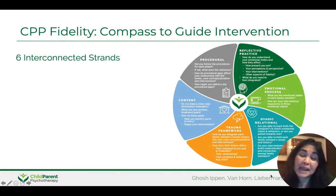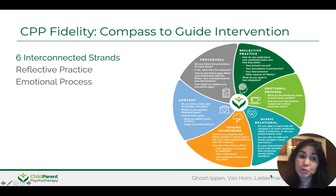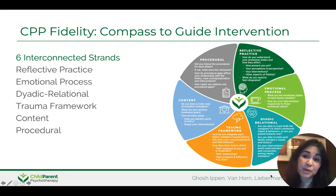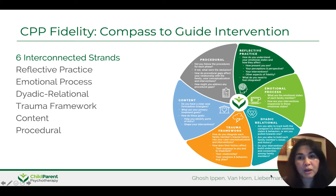Let's start with a quick overview of the CPP fidelity framework. CPP fidelity is comprised of six interconnected strands: reflective practice, emotional process, dyadic relational, trauma framework, content, and procedural. On the right, you see our CPP fidelity compass, which can be downloaded from childparentpsychotherapy.com. This compass is meant to guide us—we'll go into it more later during training—but it's meant to guide us when family circumstances are complex or when there are lots of systems challenges and we might typically get lost.